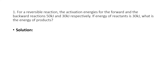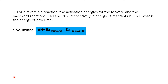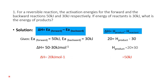The first problem: For a reversible reaction, the activation energy of the forward and the backward reaction is 50 kilojoules and 30 kilojoules respectively. If the energy of the reactant is 30 kilojoules, what is the energy of the product? The formula is: ΔH = Ea(forward) − Ea(backward). Inserting: 50 − 30 = 20 kilojoules per mole.